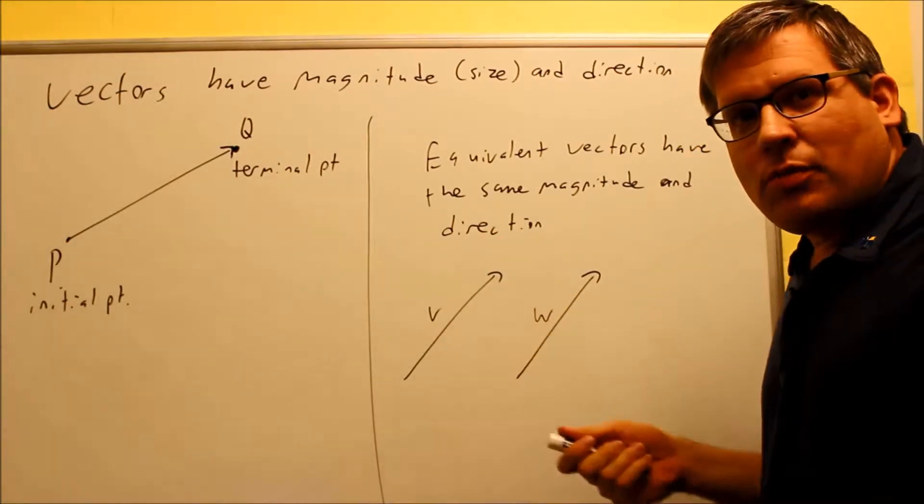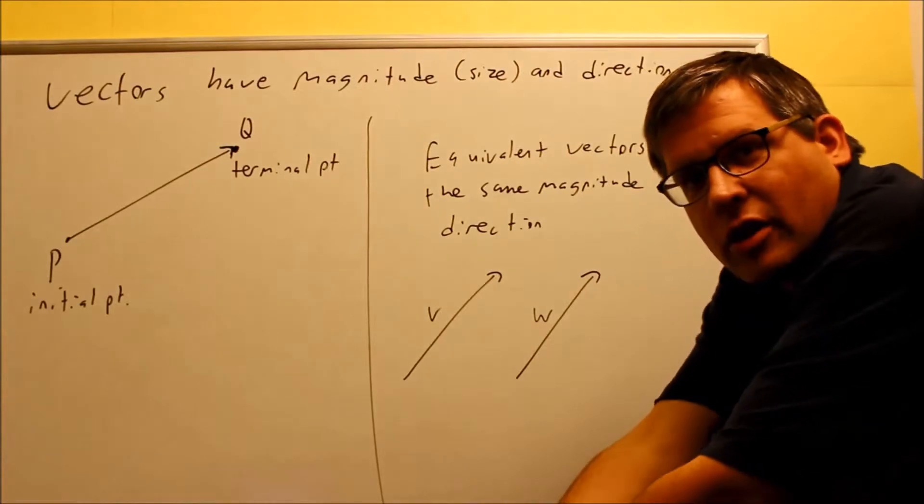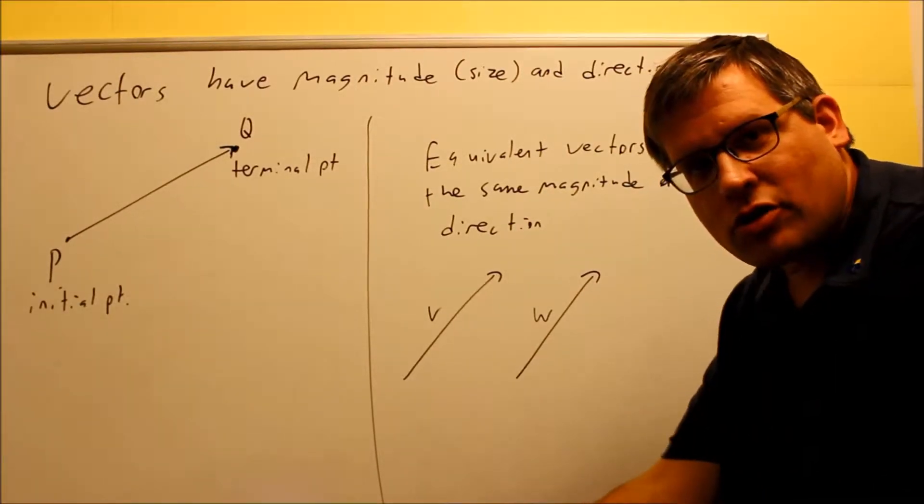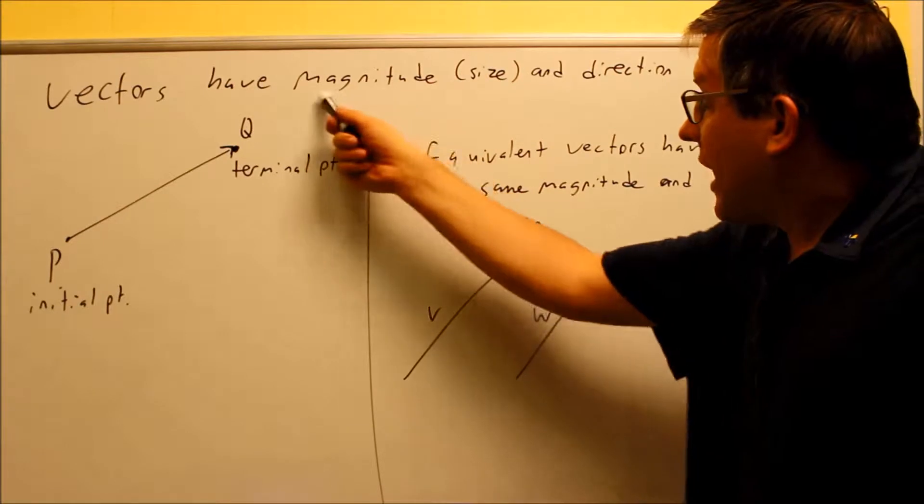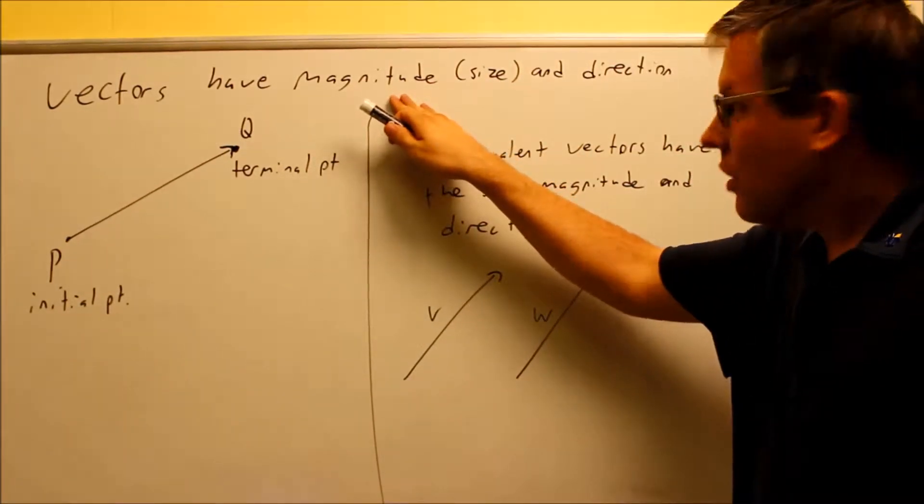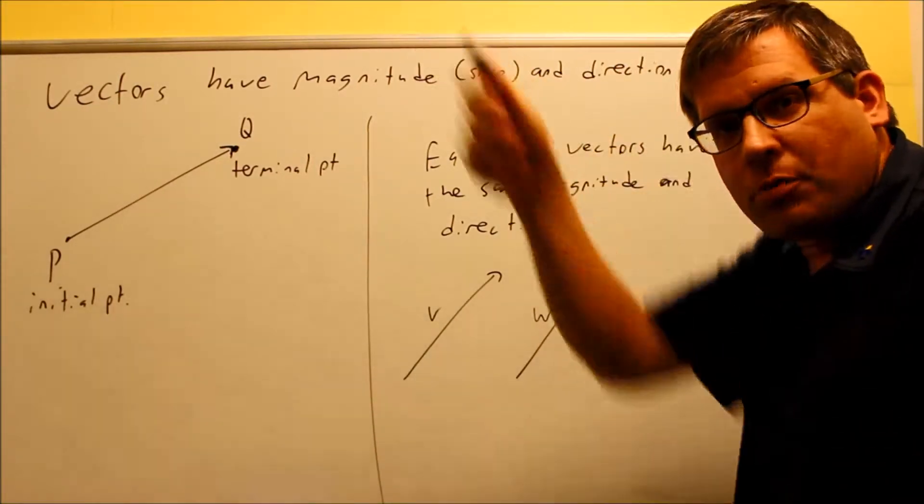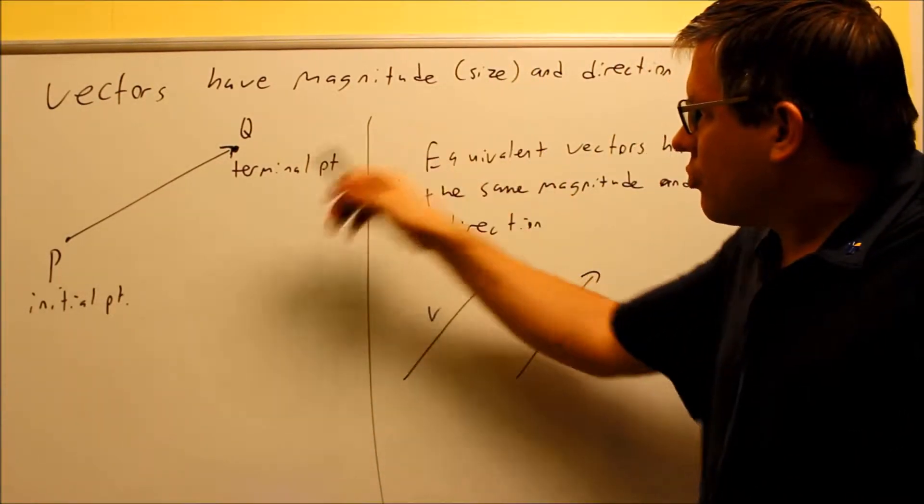A vector might be a force directed at a certain area. Maybe I might be pushing down at something, it's going down in a direction at a certain amount of pounds. The pounds in that case would be the force, that's your magnitude, and then also we have a direction, which direction am I pointing it down or pushing it up, depends on which direction it is.